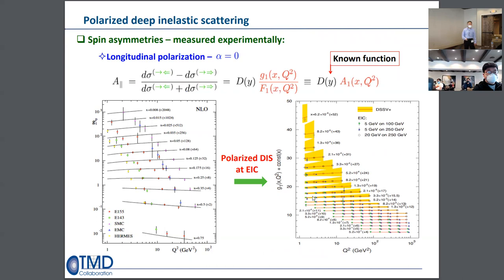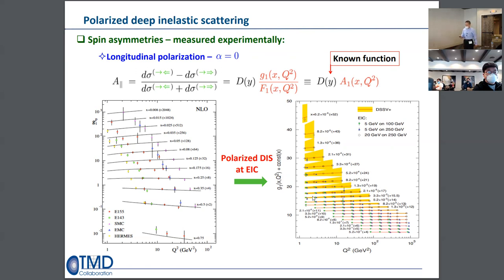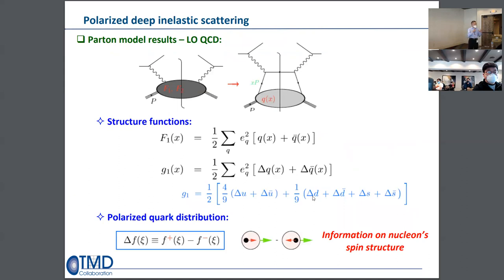For many years we only had limited data for g1 — the spin-dependent measurements have much lower rates and larger uncertainties than the spin-averaged F1 and F2 data which cover five orders of magnitude in Q^2. The current g1 data is primarily from the SLAC experiment about 30 years ago. With the EIC under construction, expected 10 years down the road, we anticipate significantly more data on spin-dependent structure functions.